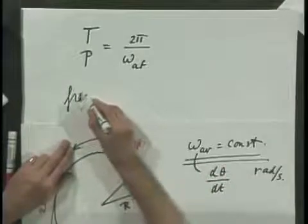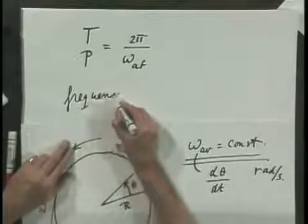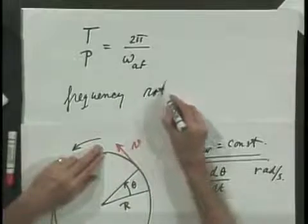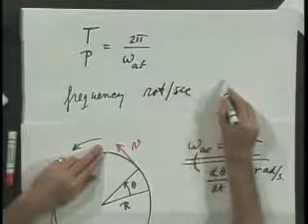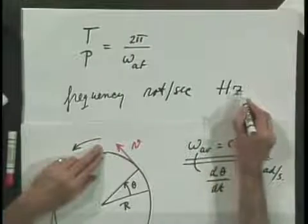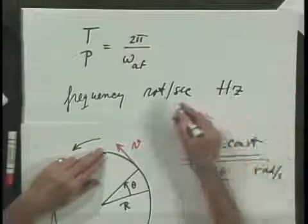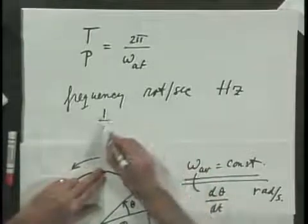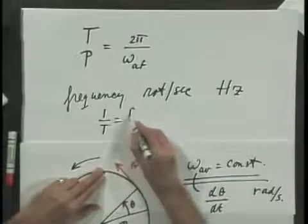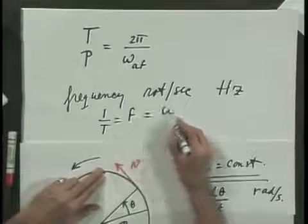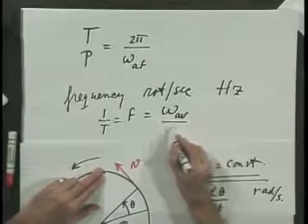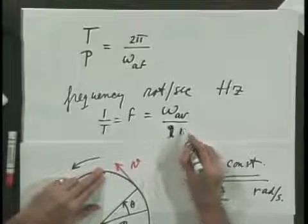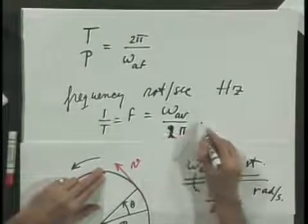The word frequency — not angular frequency, simply frequency — is in the case of a disk the number of rotations per second, expressed in hertz. For example, 400 hertz is 400 rotations per second. That frequency f equals 1/T, which equals the angular velocity divided by 2π, and is in hertz.